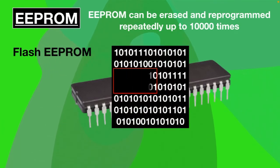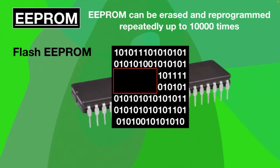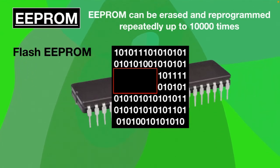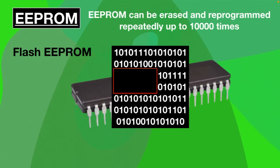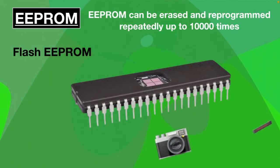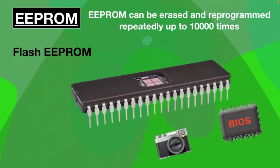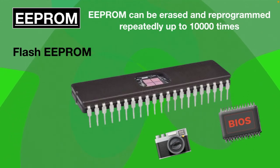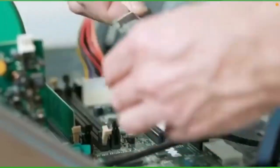The advantage of EEP-ROM is that you can delete selected data from it — this was not possible with EP-ROM, where all the data gets deleted at once. This kind of memory is used for storing a small amount of data in computers and electronic devices such as digital cameras and BIOS chips. Keep in mind that to delete data from EP-ROM and EEP-ROM, you need to take them out of the motherboard.